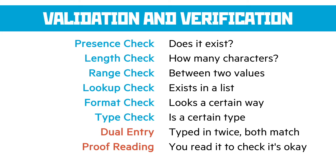There's also a type check — is it an int, a string, or a float? For verification there are fewer options that can be automated. There's dual entry, where we ask for the same data twice and check they both match — used often with passwords. The only other real form of verification is proofreading, making the user read over it and check it's correct, but there's not a lot we can do there in terms of programming.